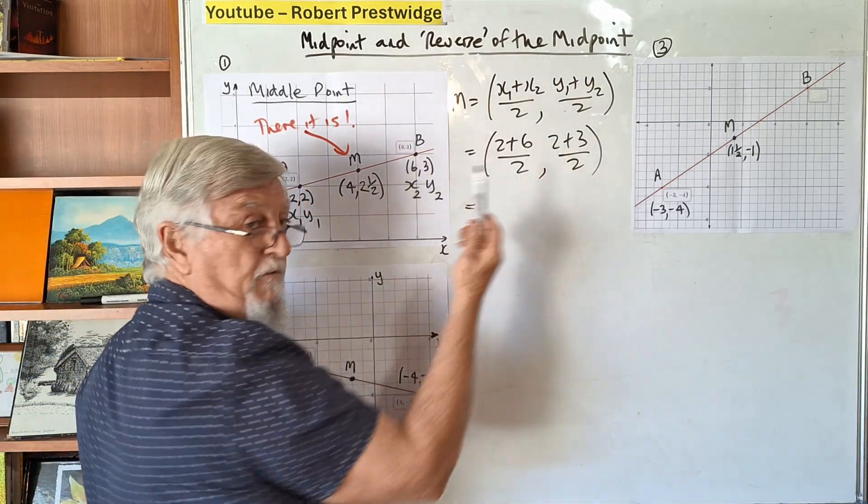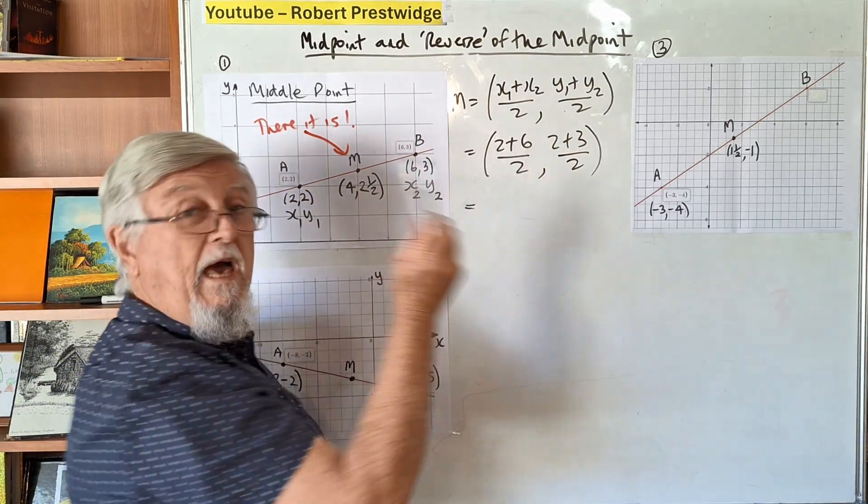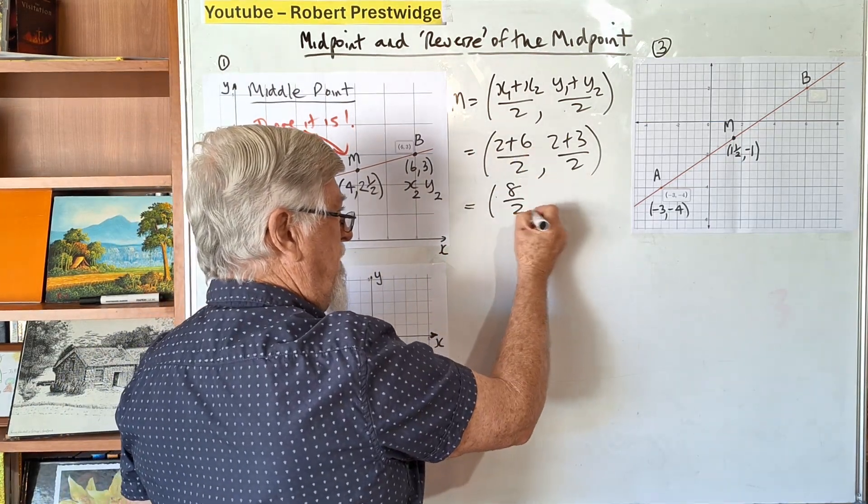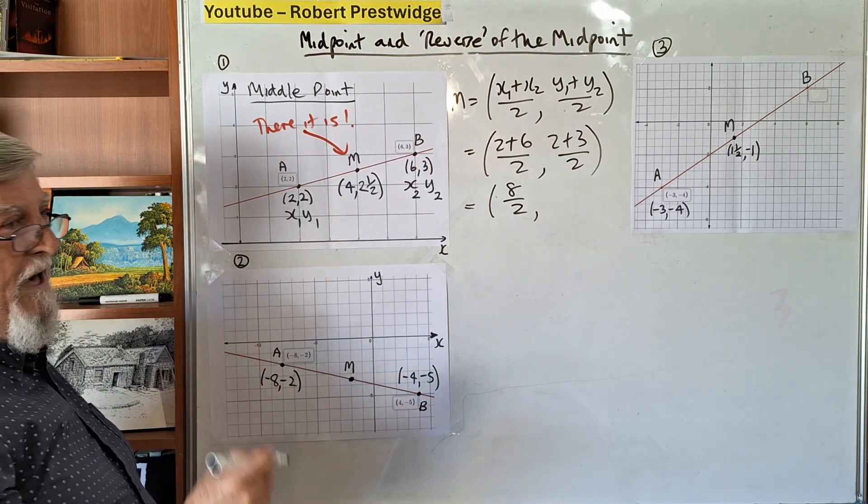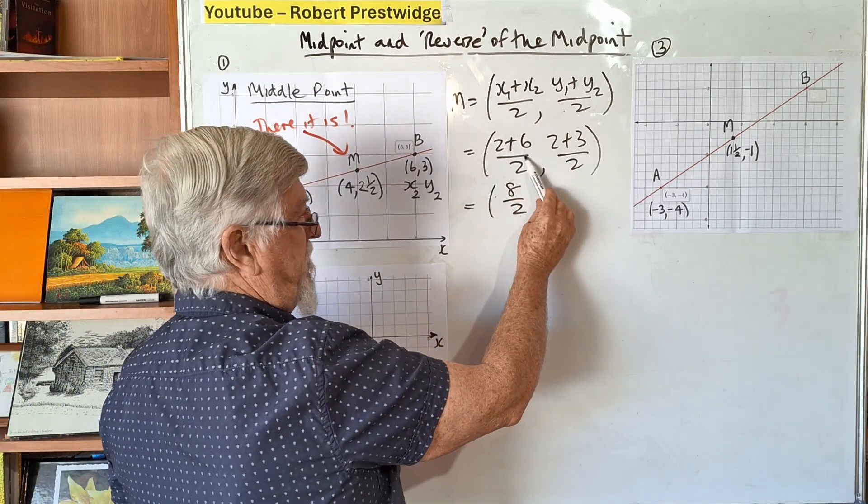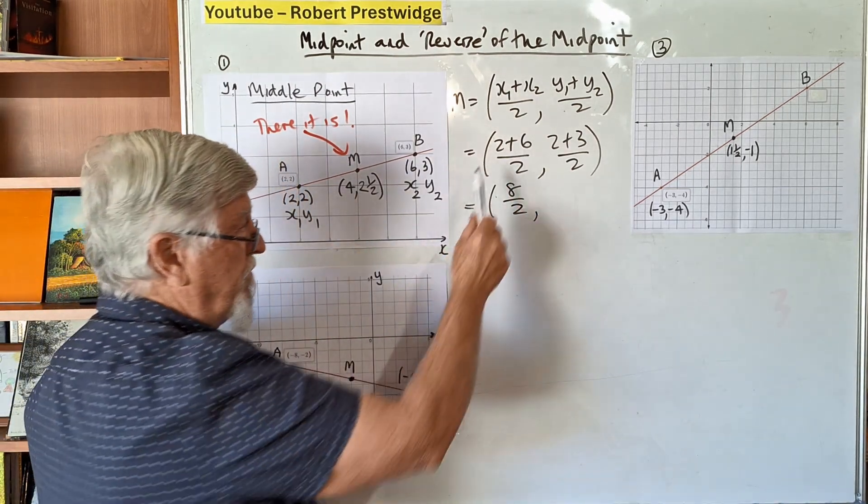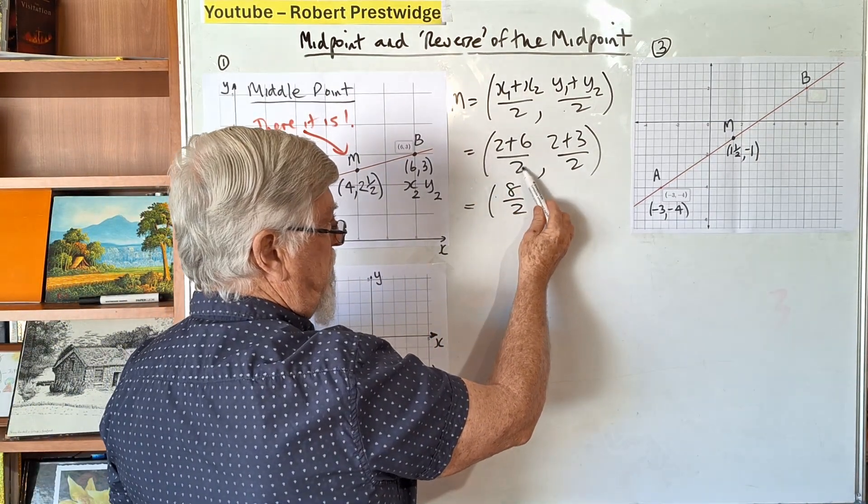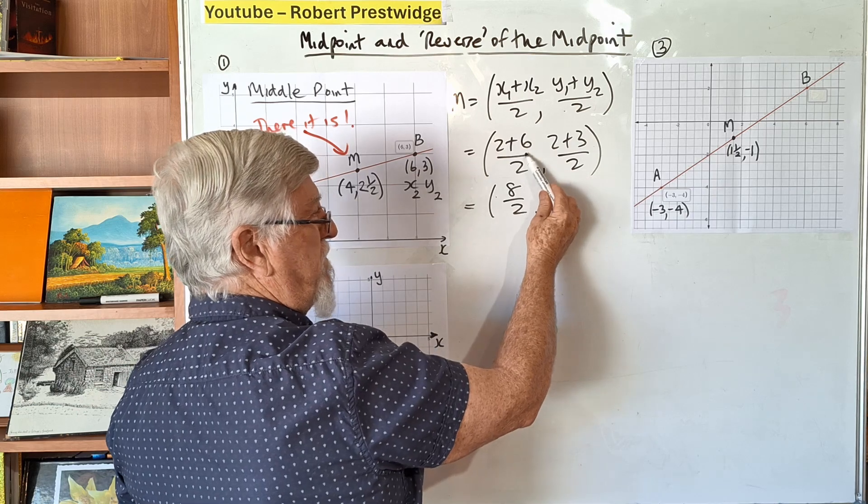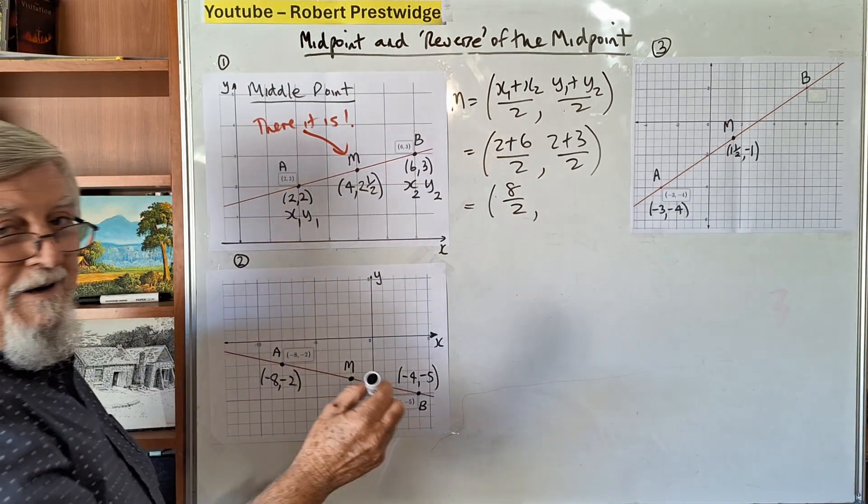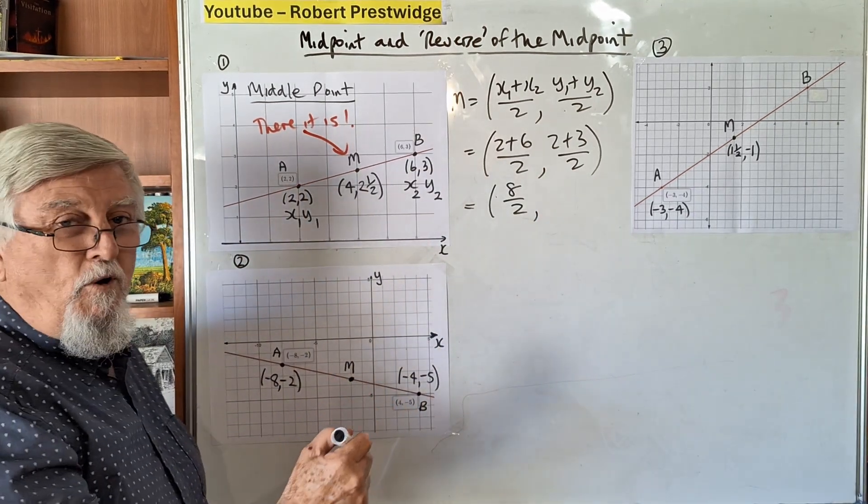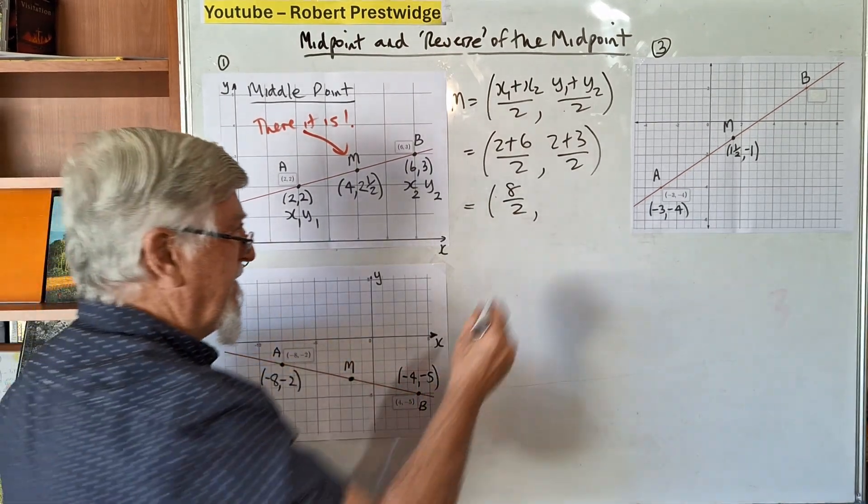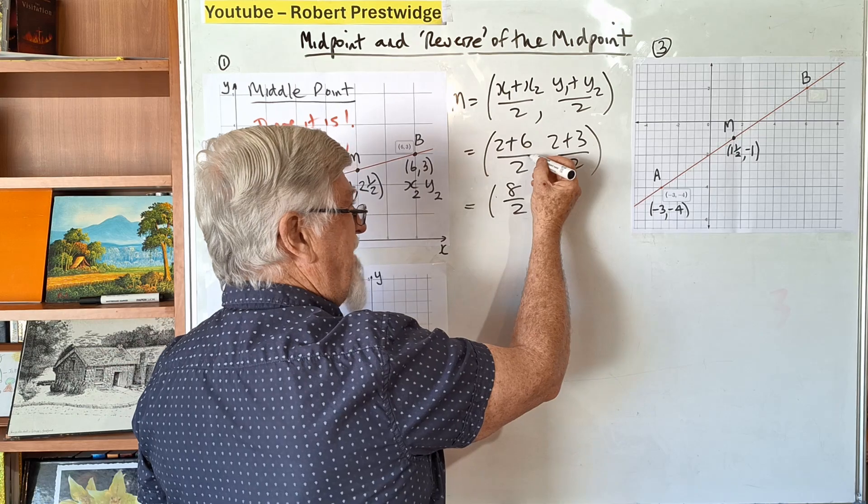I've seen people with calculators go 2 plus 6 divided by 2. If you don't put brackets in or use a fraction button, it thinks you do 6 divided by 2 first. I've seen year 12 students do it wrong.